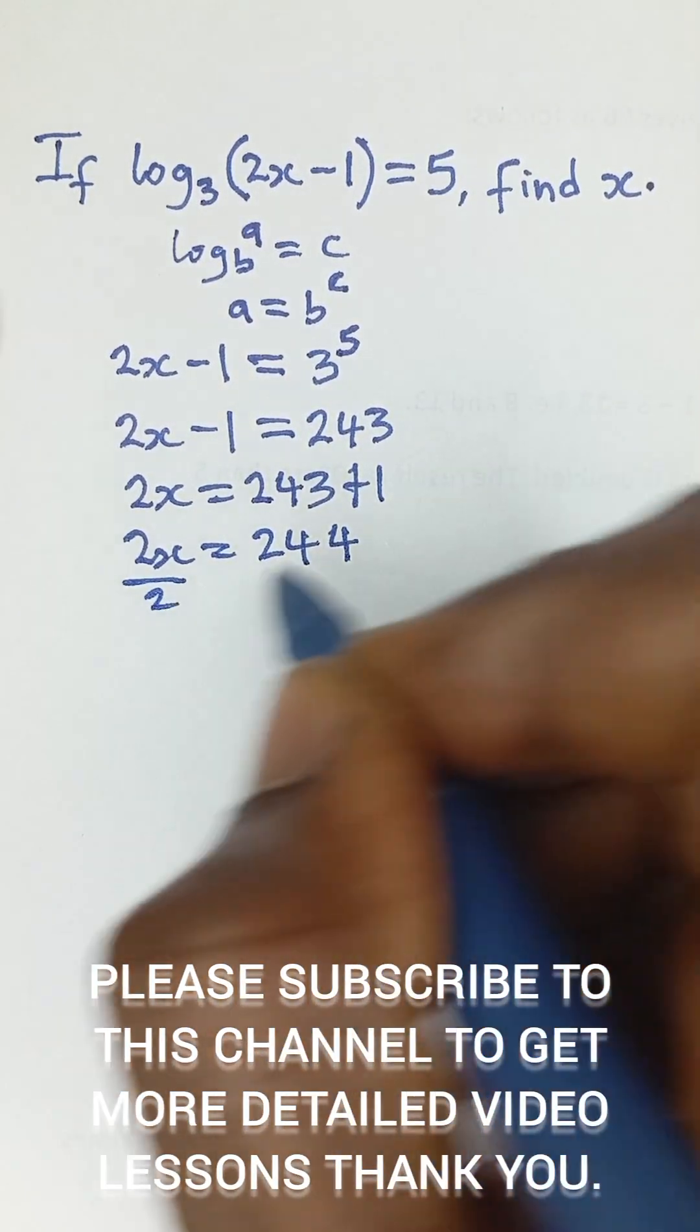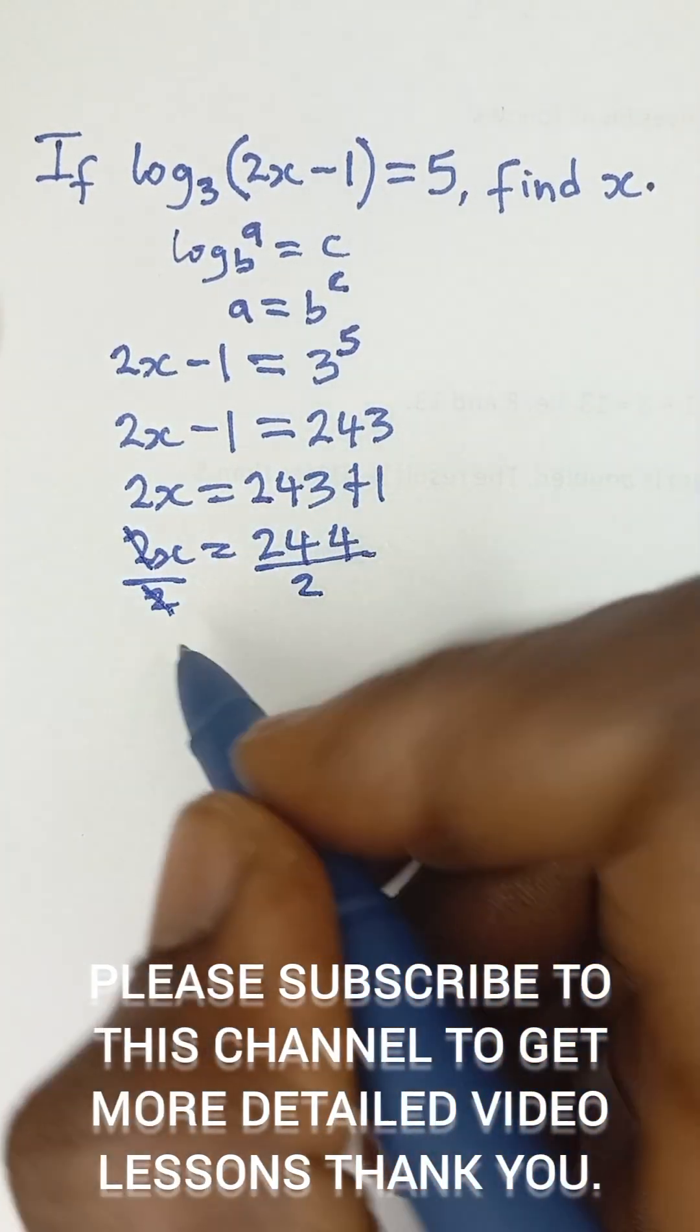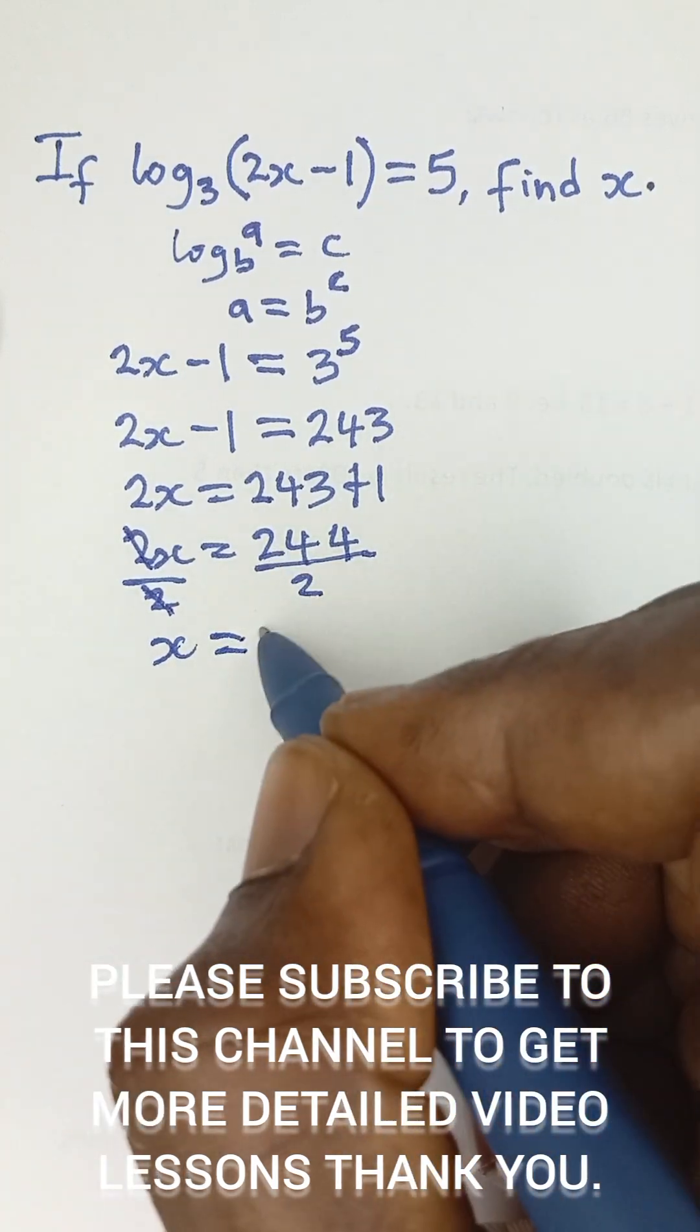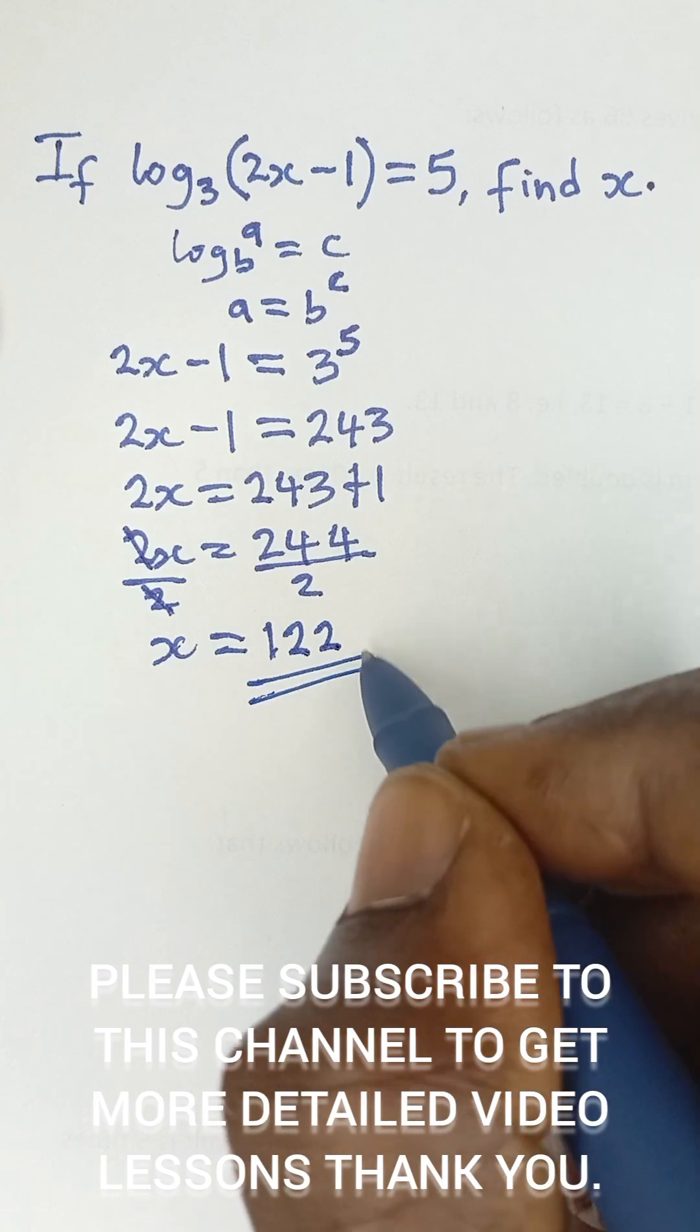When we divide both sides by 2, these two cancel. So 244 divided by 2, we are left with x on this side is equal to 122 as the final answer.